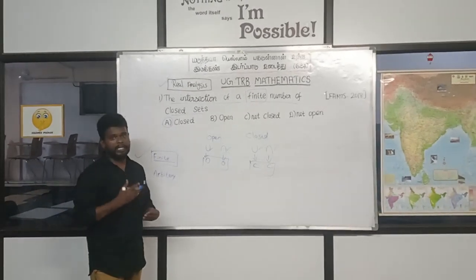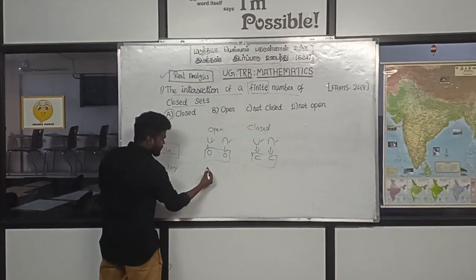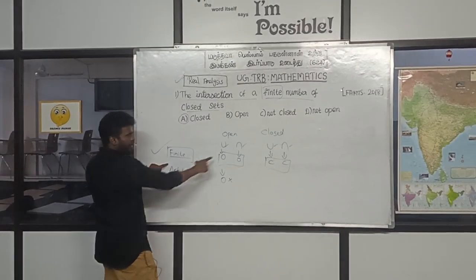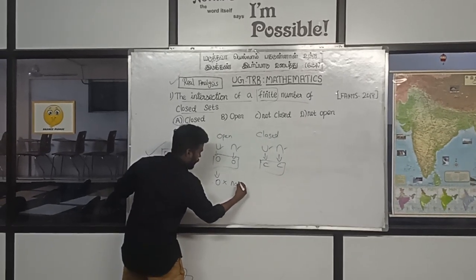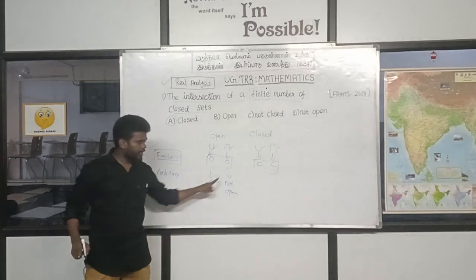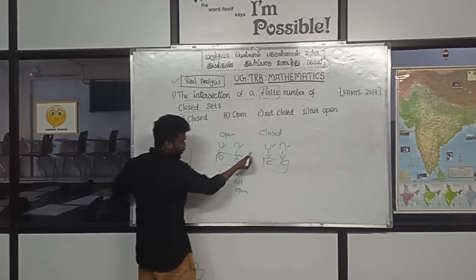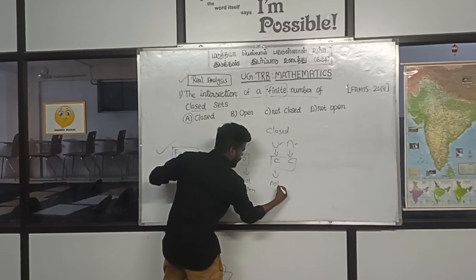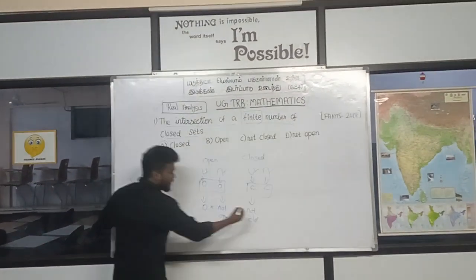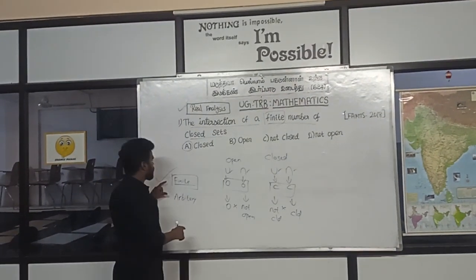Opposite opposite opposite opposite opposite. Close arbitrary open sets open, open intersection, arbitrary intersection, not close. Not open closed arbitrary.